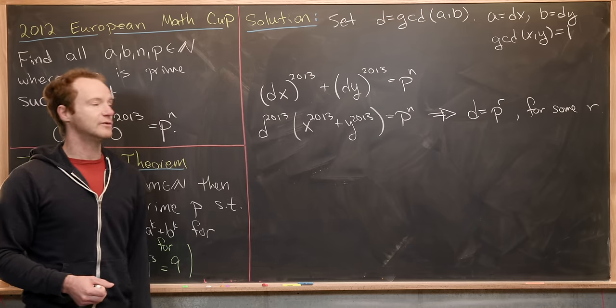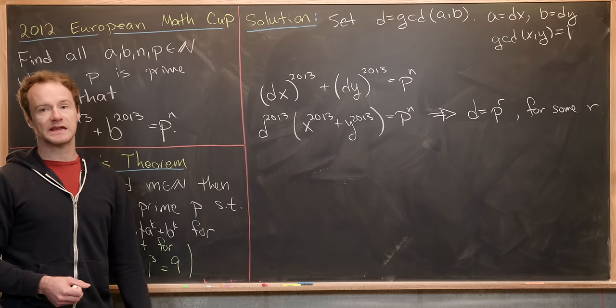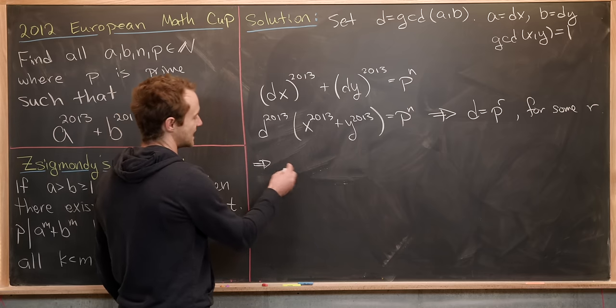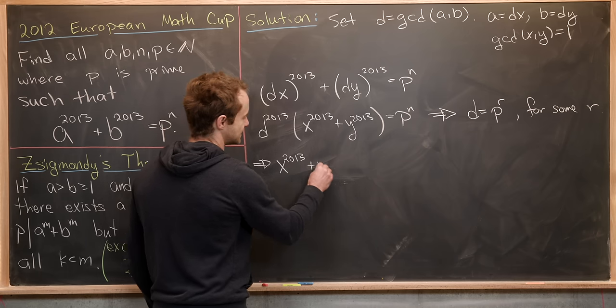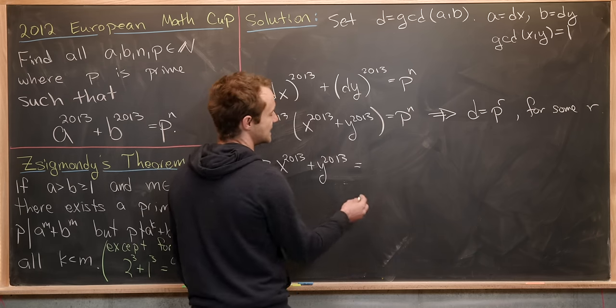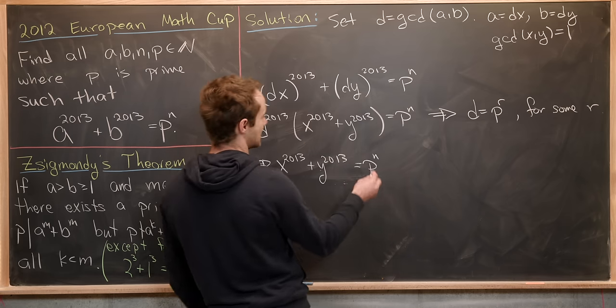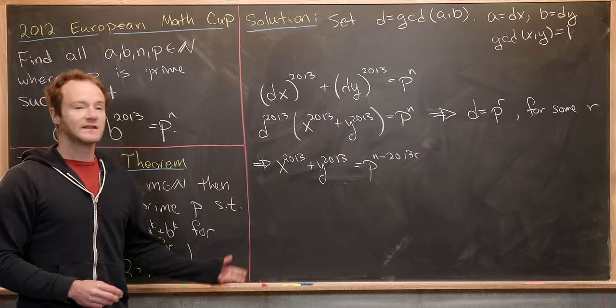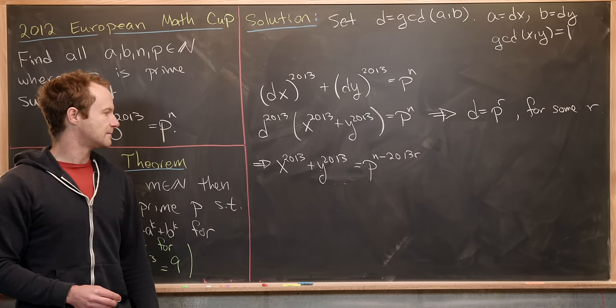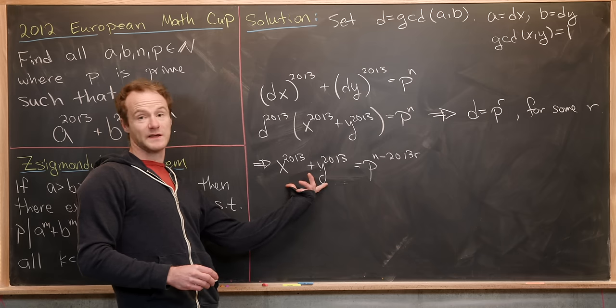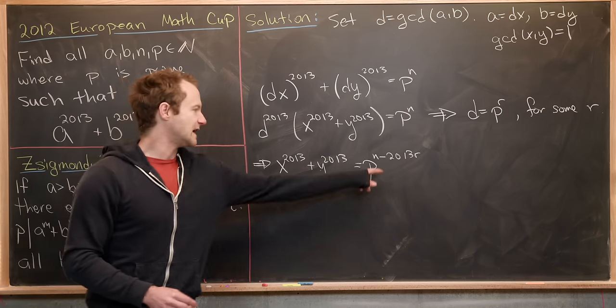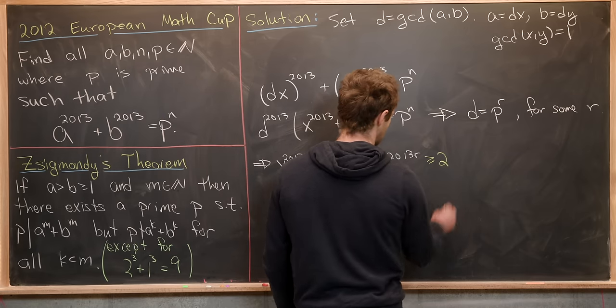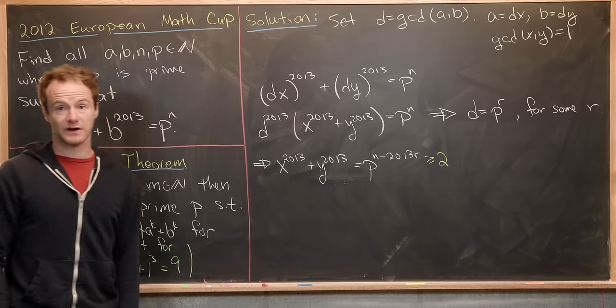Now taking that value of D and plugging it in here and then dividing it over gives us a new equation. What's that new equation? It's X to the 2013 plus Y to the 2013 equals P to the N minus 2013 times R. Now let's observe that X and Y are both bigger than or equal to 1, making this sum that's on the left-hand side bigger than or equal to 2, making this thing on the right-hand side also bigger than or equal to 2.